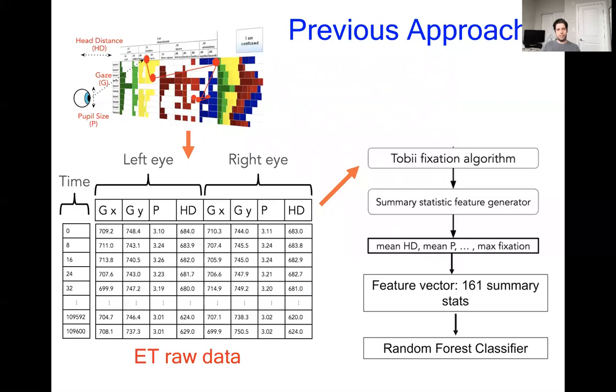The previous method by Laleh processed these raw sequences into feature vectors of 161 summary statistics, which were then processed by a random forest classifier to predict either confused or not confused.